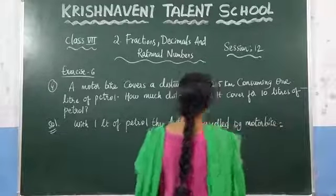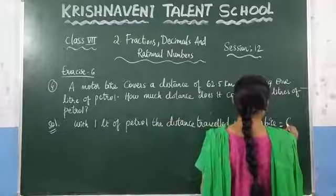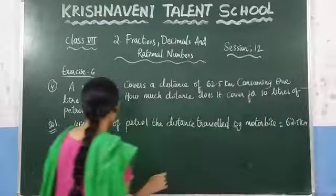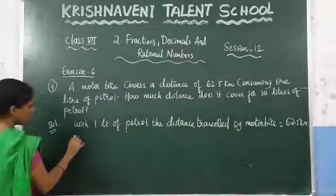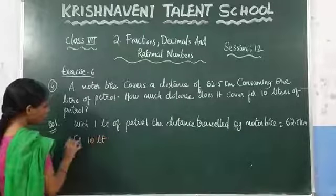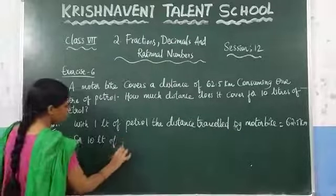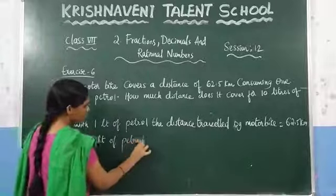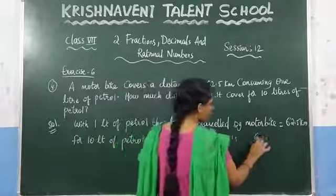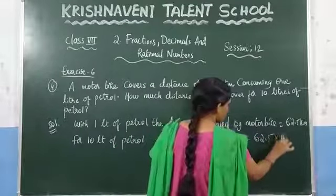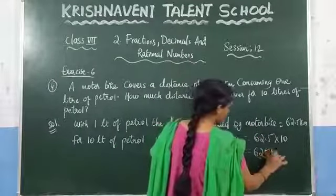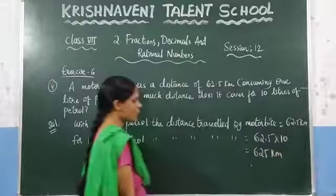With 1 liter of petrol, the distance travelled by the motorbike is 62.5 kilometers. In the question they ask for 10 liters of petrol, therefore for 10 liters of petrol, the distance travelled — just multiply 62.5 into 10. So here what you get is 625 kilometers. This is the problem.